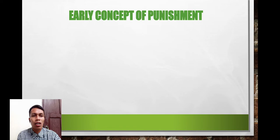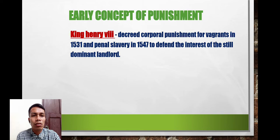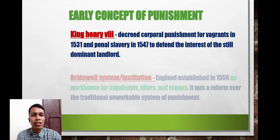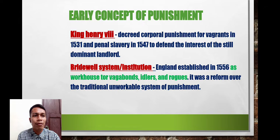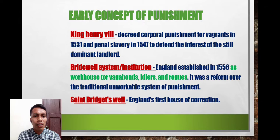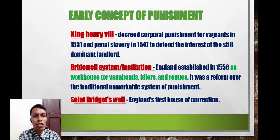During the early concept of punishment, King Henry the 8th decreed corporal punishment for vagrants in 1531 and penal slavery in 1547 to defend the interests of the dominant landlords. The Bridewell System was an institution established in England in 1556 as a workhouse for vagabonds, idlers, and rogues. It was a reform over the traditional unworkable system of punishment. St. Bridget's Well in England was the first house of correction.